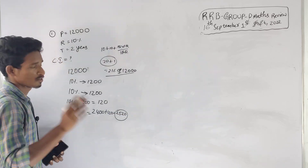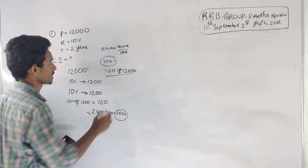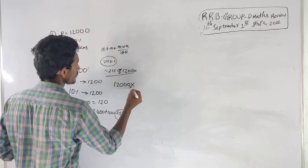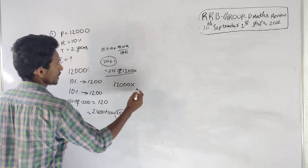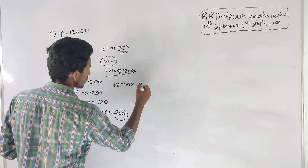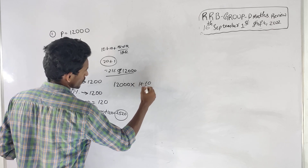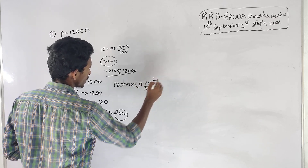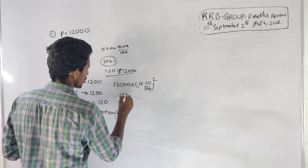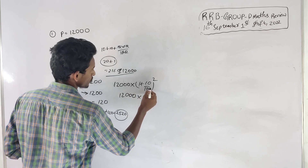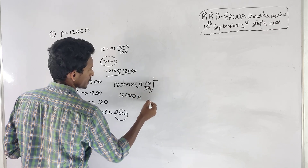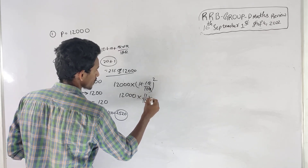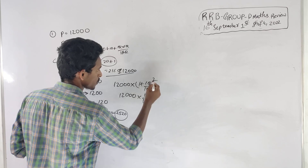The value is 2520. Using the formula: 12,000 into 1 plus R by 100, whole power T. That is 1 plus 10 by 100, so 11 by 10, whole square for 2 years.